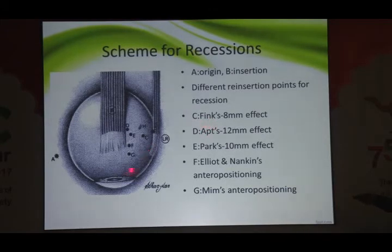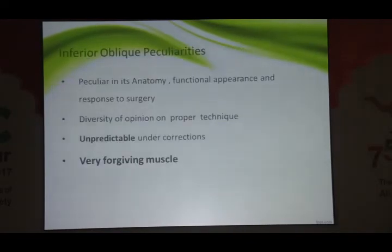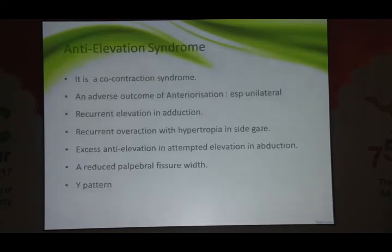These are some of the points where you can do a recession: Fink's recession, Fink's point, Apt's point, Parks, Elliot, and Nankin. This is for the anterior insertion of inferior oblique — MIMS anteropositioning is anterior to inferior rectus, and F is the total anteropositioning. There is also a modified Elliot and Nankin. This is a very forgiving muscle but you should be aware of the basic structures. The most dreaded complication of inferior oblique anteropositioning is anti-elevation syndrome.